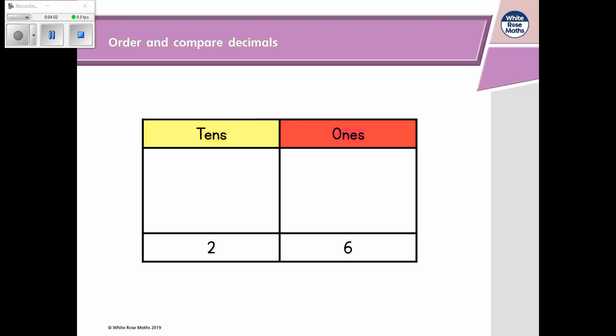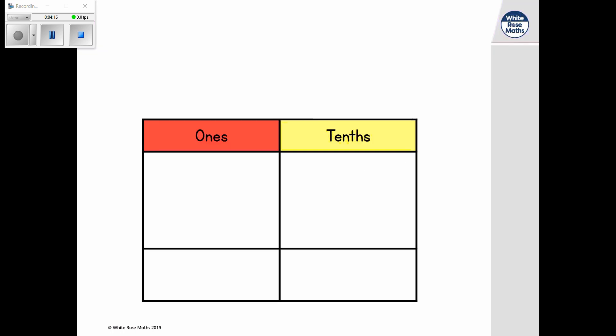So in the number 26, the 2 ten counters have a greater value than the 6 ones. The position or place on the grid determines its value.